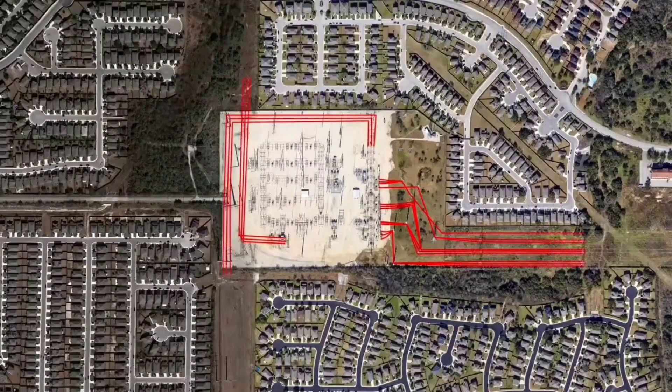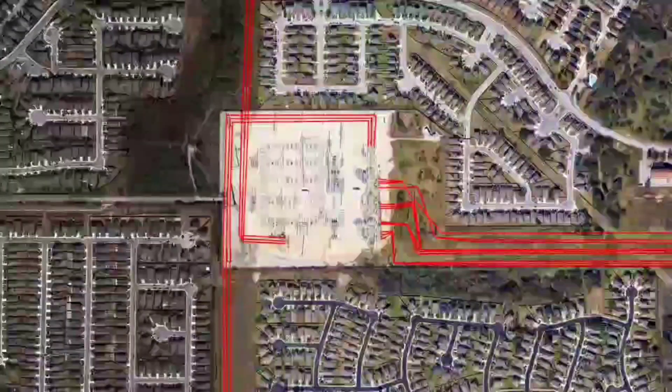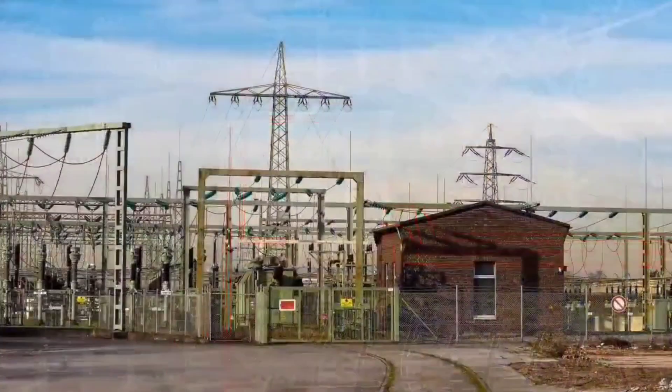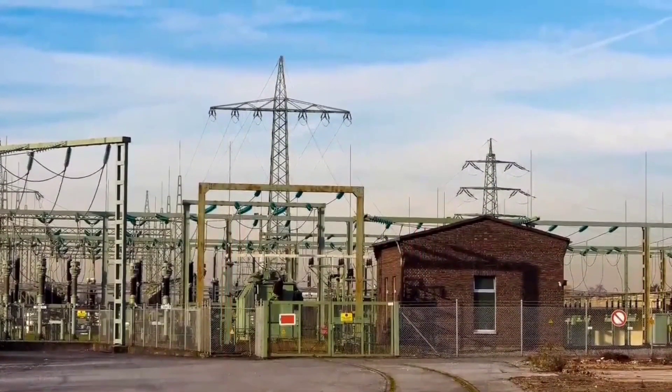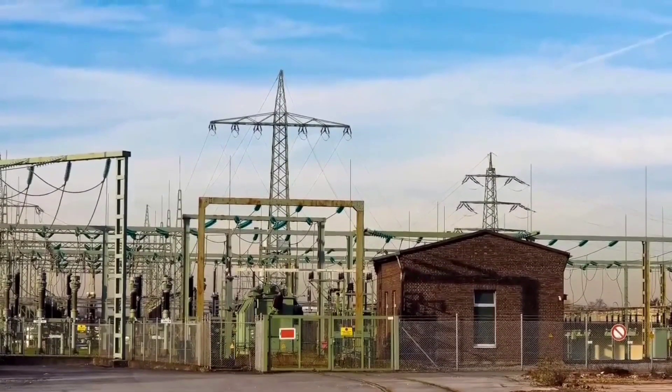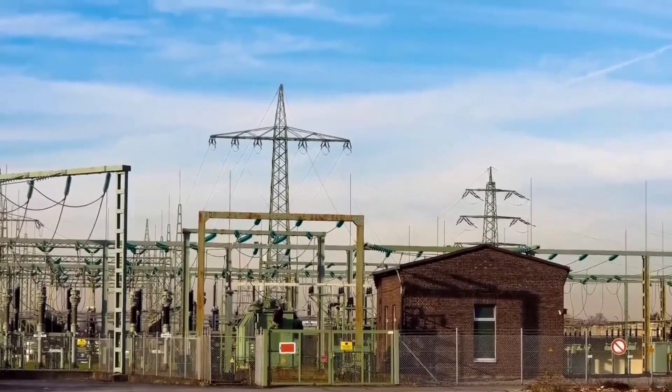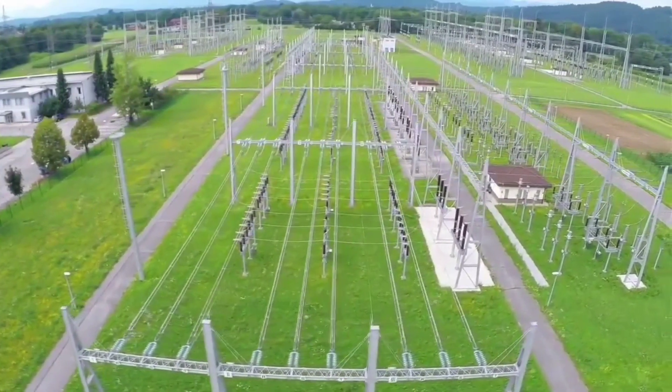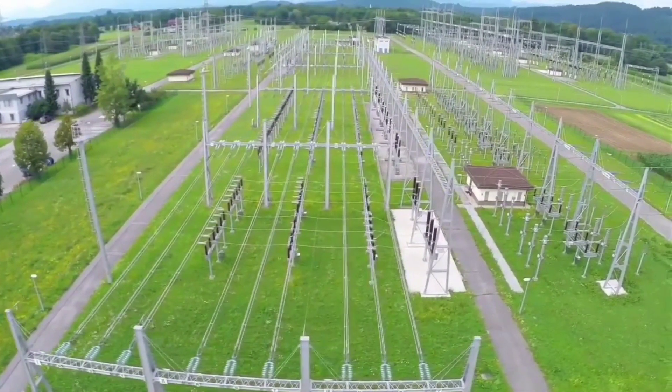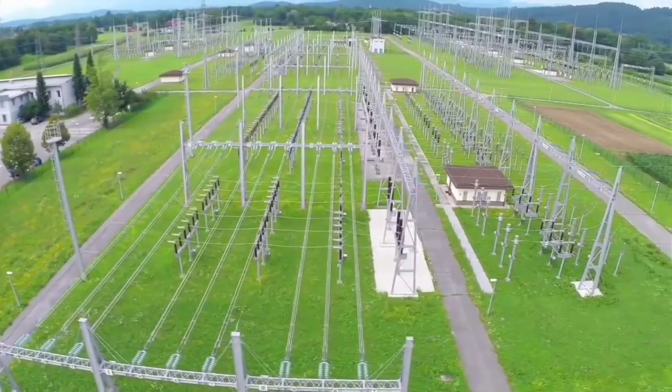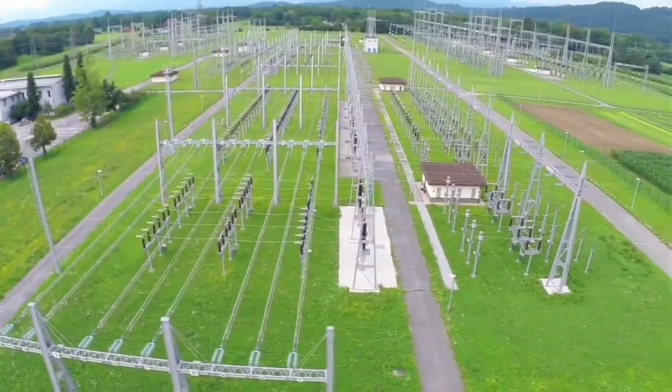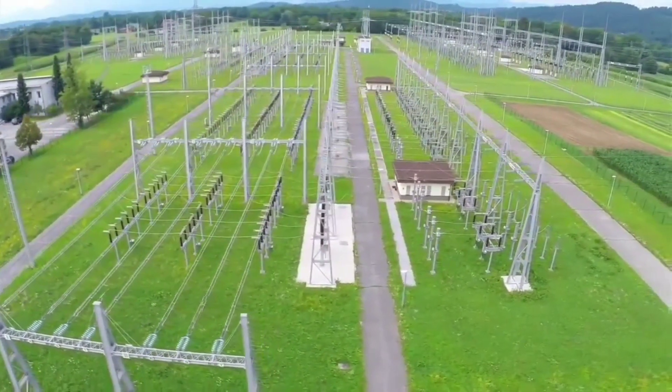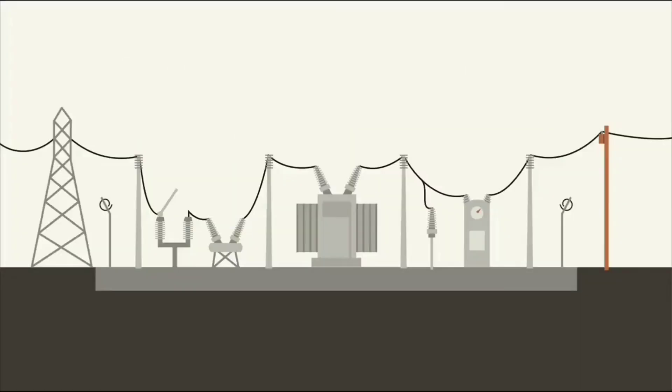Substations divide parts of the transmission network and act as junction points in the power grid. Without proper transmission lines and equipment working together, substations can malfunction.